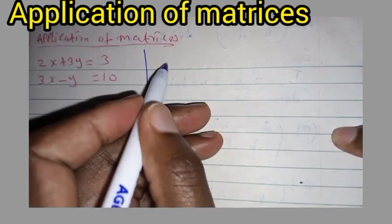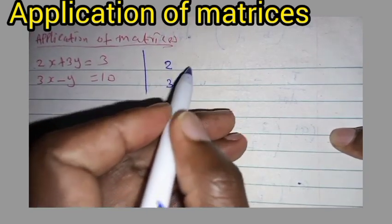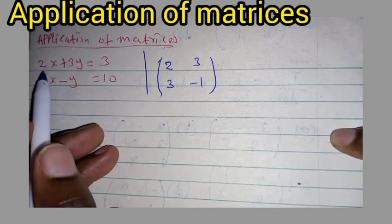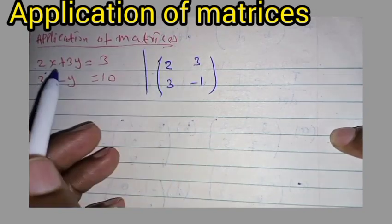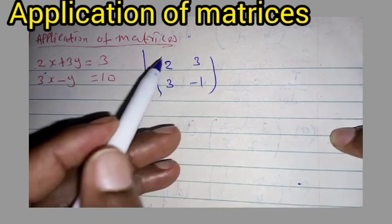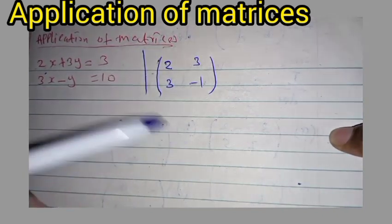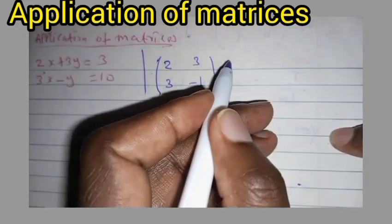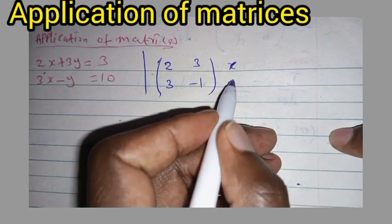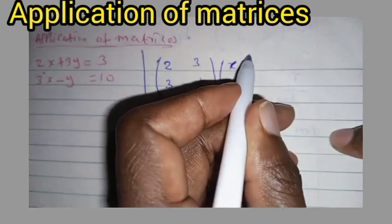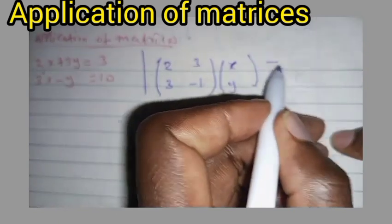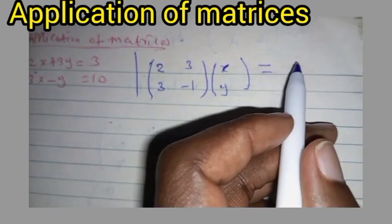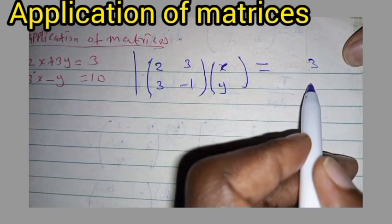We write the matrix as [2, 3; 3, -1]. The coefficients of x form the first column and the coefficients of y form the second column. Then you write x and y as the variable vector, which is equal to the right-hand side: [3, 10].